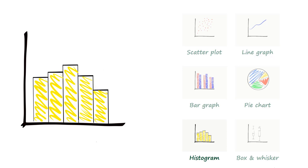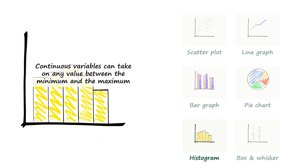Histograms are most commonly used for continuous variables. Continuous variables can take on any value between the minimum and maximum value. Examples include height, weight or blood pressure.